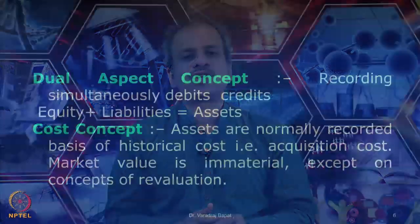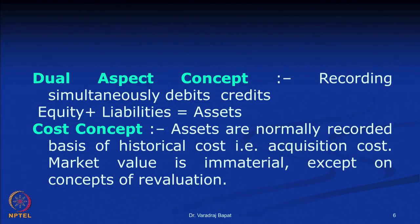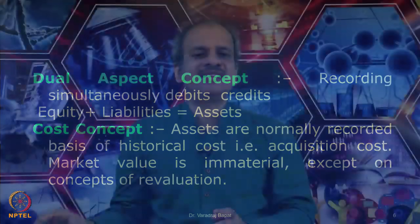The next one is known as cost concept. Assets are normally to be recorded at historical cost — that is, at the acquisition cost. We ignore market value unless there is some specific condition for taking it into account. Otherwise, both asset valuation and recording of expenses happen on actual cost.